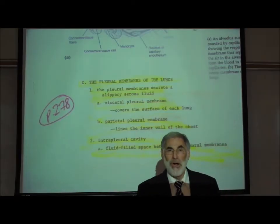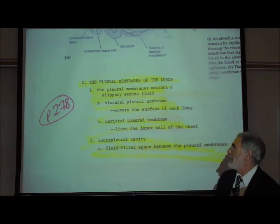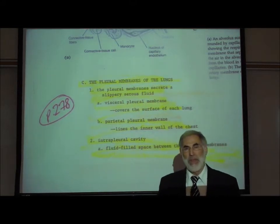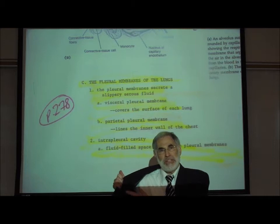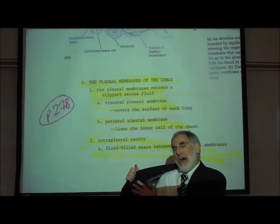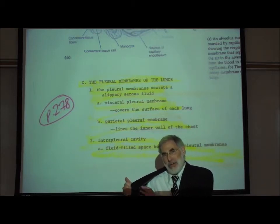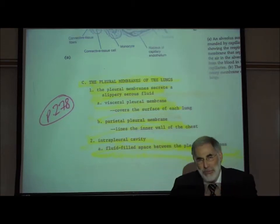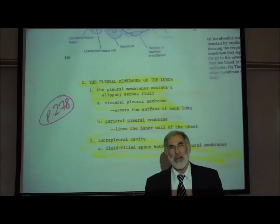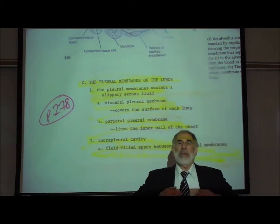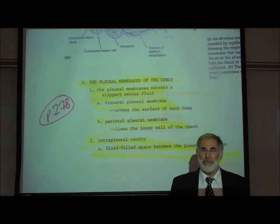We now wish to remind you of the pleural membranes. You should have learned about pleural membranes in anatomy. There are two of them. There is the parietal pleural membrane, which is a simple squamous epithelial membrane attached to the inside wall of your chest, just like a lining on the inside of a coat. There is also a visceral pleural membrane that adheres to the surface of the lungs.